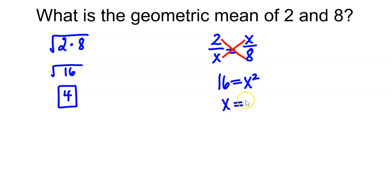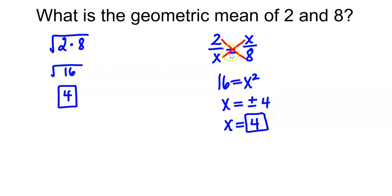By taking the square root of both sides, we would include plus or minus 4. However, in this video we're going to be working with triangles, and triangles can never have a negative side. So we are simply going to use the positive value. Those are two ways to find the geometric mean. In this video, we're going to use the proportion method — if we say that x is the geometric mean of 2 and 8, this is how you would set it up. Don't forget that for this video.